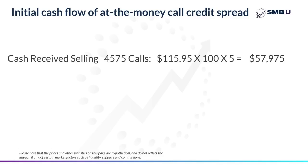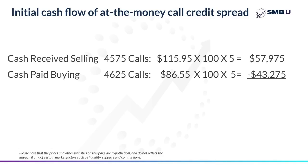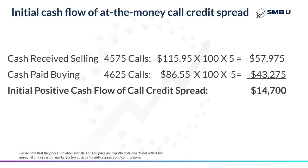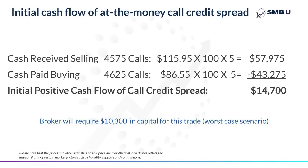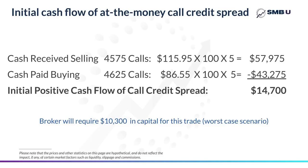But then you'll turn right around and pay $86.55 for the five calls 50 points away up at 4625. And for those, you'll pay a total of $43,275, which results in net cash flow initially of $14,700. And your broker, by the way, will require you to have at least $10,300 in your account at that point, which is also the trade's worst case scenario.